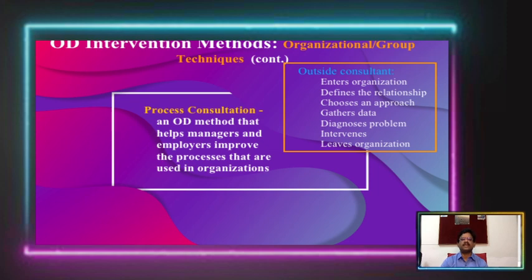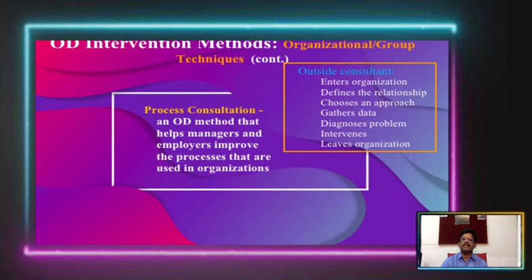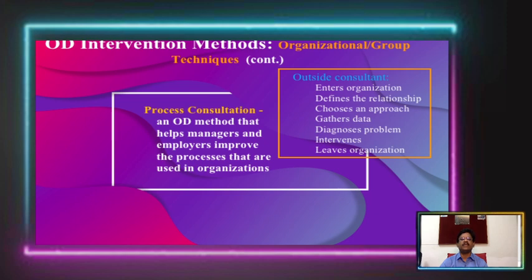The next important method is process consultation. This involves engaging outside consultants — another method that helps managers and employees improve the processes used in organizations. Outside consultants come from outside, they are experts who look at the organization, identify issues, critical problems, and unhealthy issues. They identify such things and resolve them with the right solutions, training all employees and using all people to overcome the drawbacks in the organization. The consultants look at the organization, view the solutions, and all employees follow that to achieve all the activities.